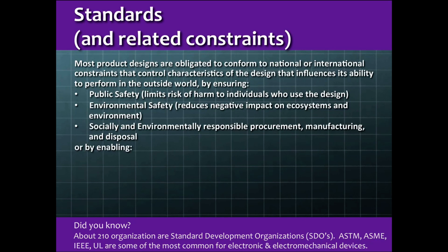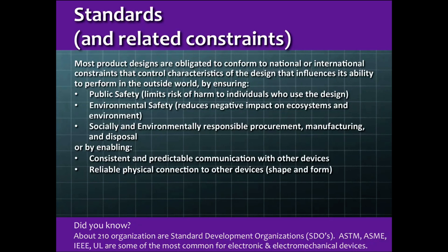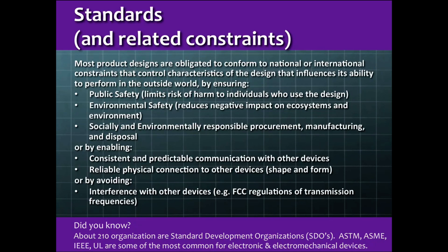Most product designs are obligated to conform to more than one standard, code, or regulation. In combination, these constraints improve the ability of a design to perform in the outside world — to plug and play well with others. They can also ensure public safety and limit the risk of harm to individuals who use the design or product, and they can play a role in limiting impact on the environment so that the negative impacts of a product on ecosystems are minimized.